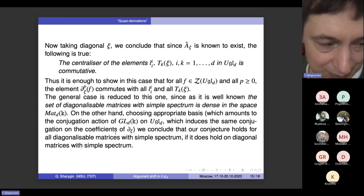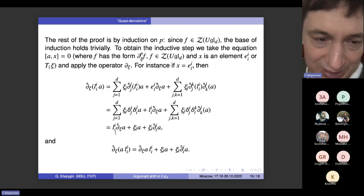So the proof is actually quite simple. First of all, we reduce the general situation to that when Xi is a diagonal matrix with distinct eigenvalues. This is done just by consideration that the group GLD acts on UGLD and acts on quasi-derivations, and that every matrix, except for very few ones, can be by conjugation sent into diagonal matrices with distinct eigenvalues.